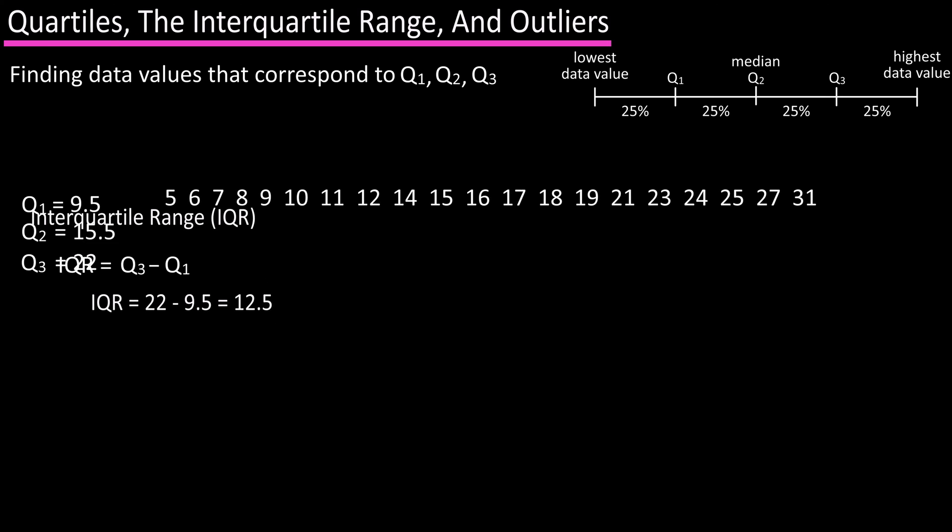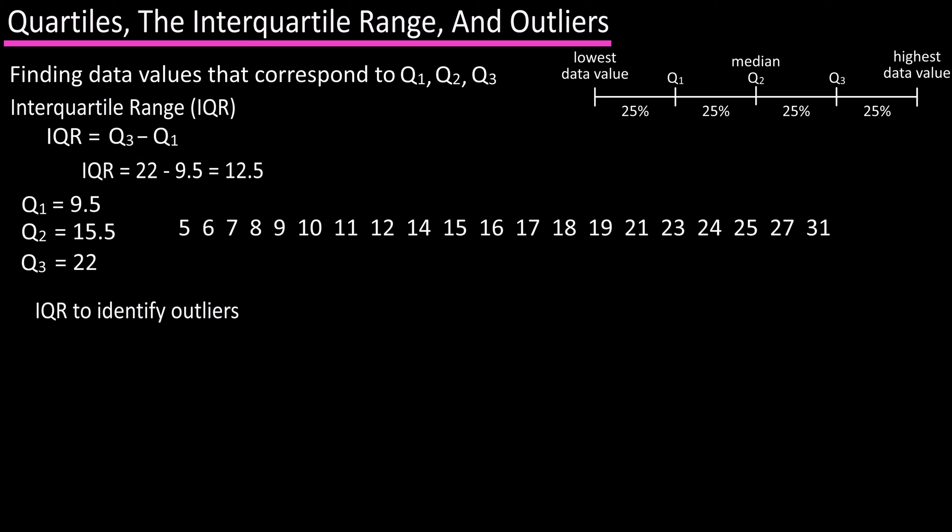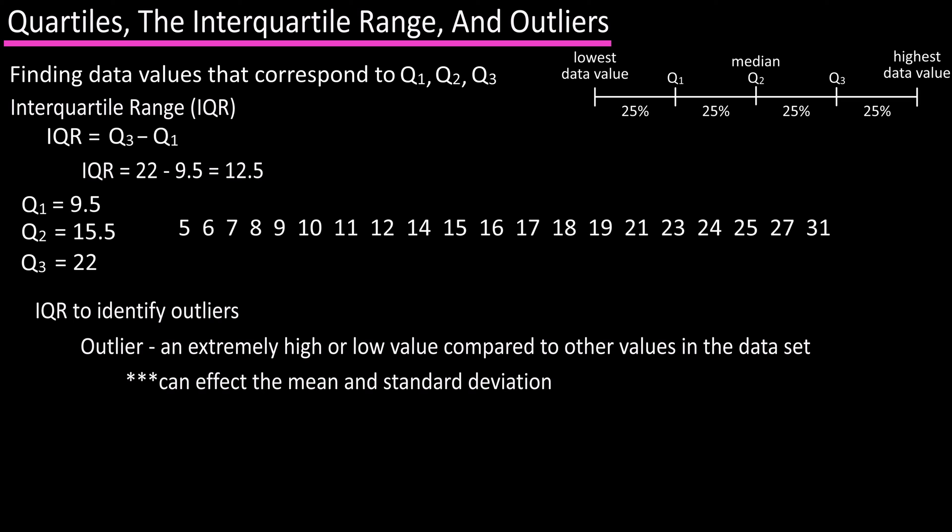The interquartile range can be used as one way to identify possible outliers. An outlier is an extremely high or low data value compared with the other data values in the data set, and it can have a dramatic effect on the mean and standard deviation of a data set.